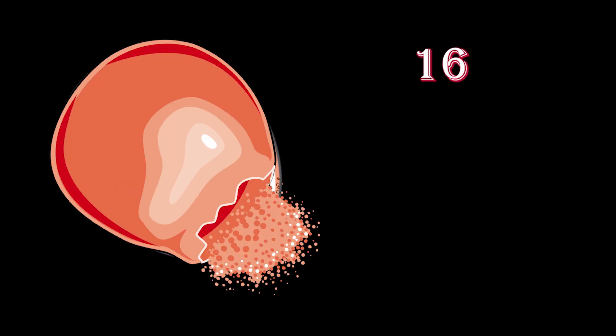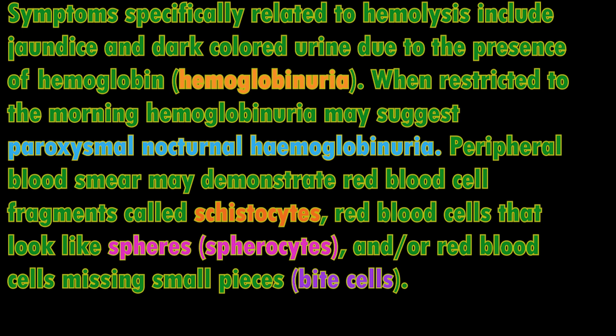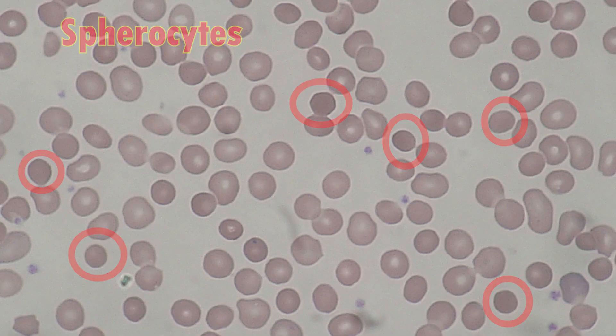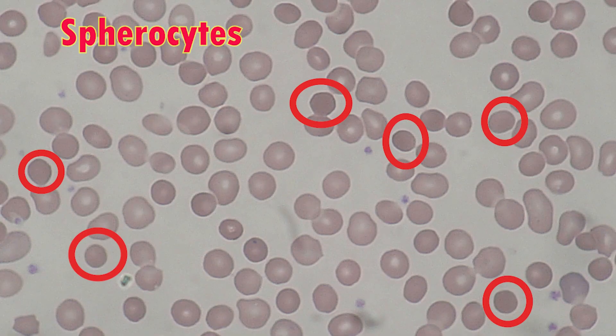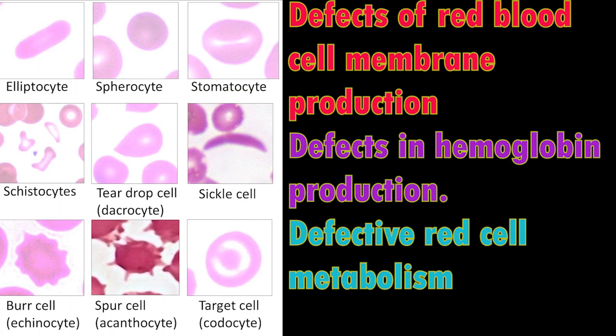Hemolytic anemias: hemolytic anemia is a form of anemia involving the abnormal breakdown of RBCs either in the blood vessels or elsewhere in the body. Causes may be defects in the RBC membrane, defects in hemoglobin production, or defective RBC metabolism causing hemolysis due to increased copper level.